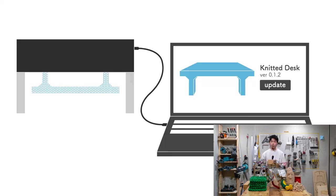So I call this undoing and updating of physical objects. With Solid Knitting, you can treat physical objects as software. You can update your desk through the internet, for example.